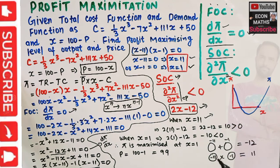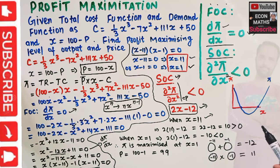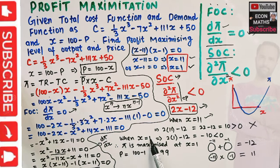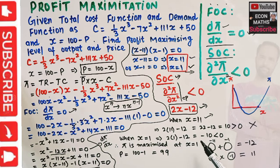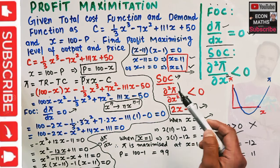Evaluating at X = 11: d²π/dX² = -2(11) + 12 = -22 + 12 = -10. Wait — that is -10, which is less than zero. Let me correct: at X = 11, we get 2(11) - 12 = 22 - 12 = 10, which is greater than zero, so X = 11 does not satisfy the second order condition. At X = 1: 2(1) - 12 = 2 - 12 = -10, which is less than zero, satisfying the second order condition.